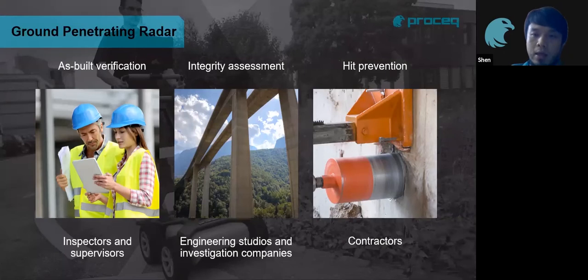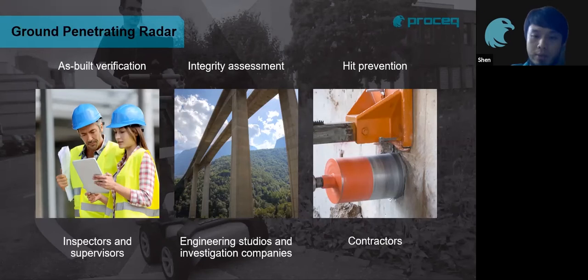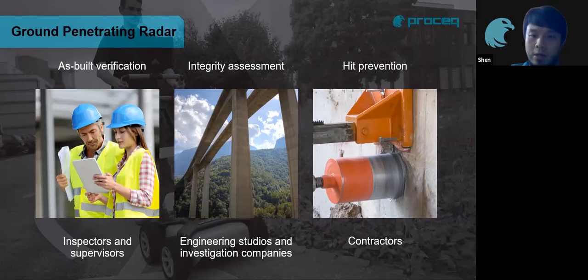The last core function is hit prevention. Many companies want to assess the compressive strength of a building, which requires extracting core samples. In order to extract cores without hitting a rebar, a user has to detect all rebar locations first before placing the coring equipment on the correct area.